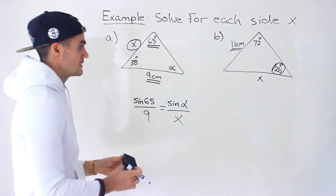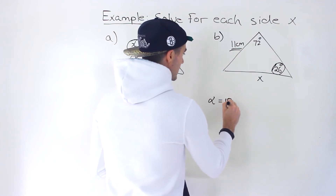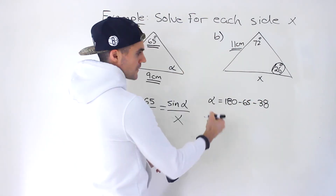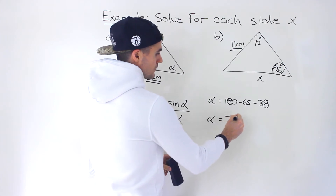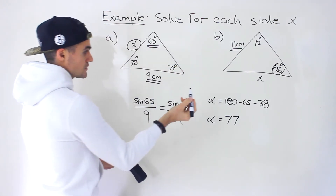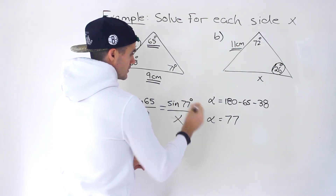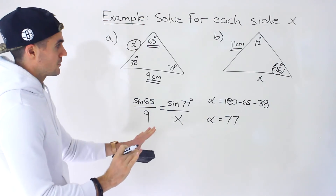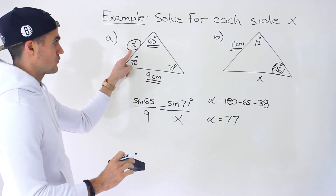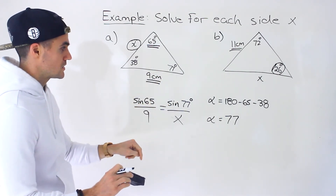Both of those ratios have to be equal. But in this equation right now we have two unknown variables and we can't solve for that. However, we can get alpha very easily because we have the two other angles. Basically, angle alpha is going to be 180 minus 65 minus 38. When you do that subtraction you end up with 77 degrees for angle alpha. So this here is going to be 77 degrees, and now we can plug that 77 degrees in. We had to do this preliminary step to get this angle.